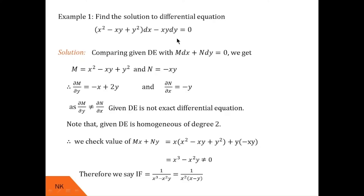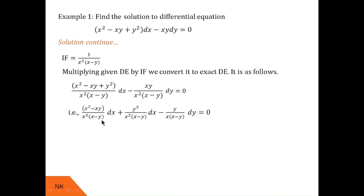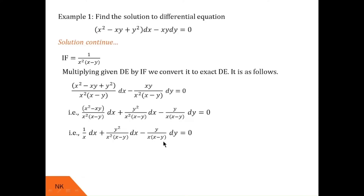Now we multiply this differential equation by the integrating factor and convert it into an exact differential equation. After multiplication and simplification, distributing the numerator over the denominator we get two terms. Taking x common, (x − y) cancels with the denominator leaving 1/x. The second term is y²/[x²(x − y)] and the third term is −y/[x(x − y)] dy.